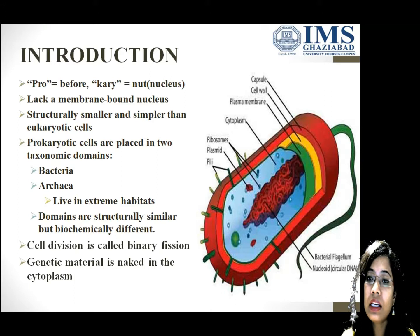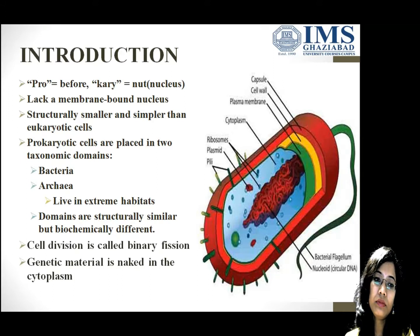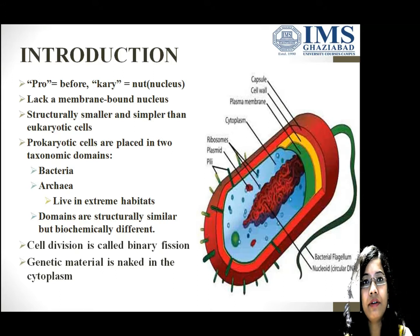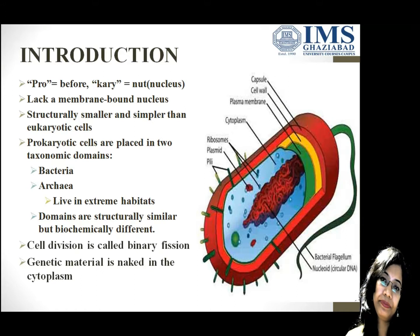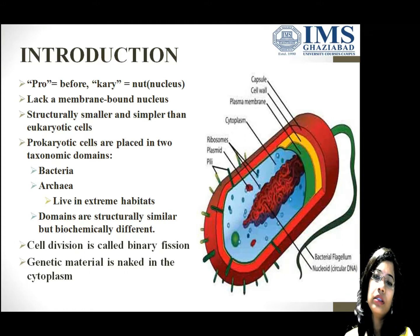The bacterial cell wall consists of peptidoglycan, whereas archaeal bacterial cell wall lacks it. Cell division occurs basically through binary fission. The single cell enlarges, chromatin material divides, cytoplasm divides, and then gives two daughter cells. Genetic material is naked in the cytoplasm.